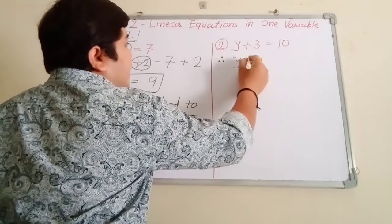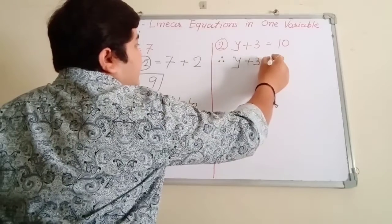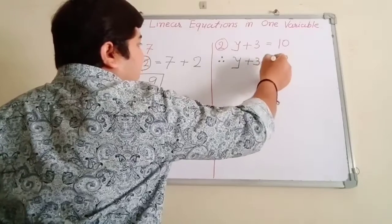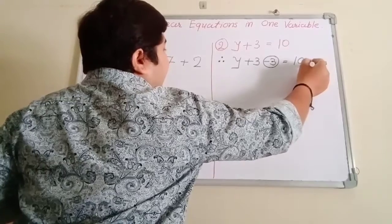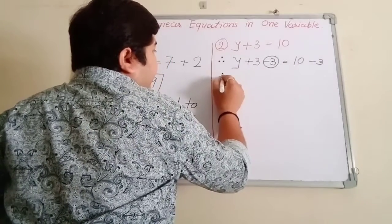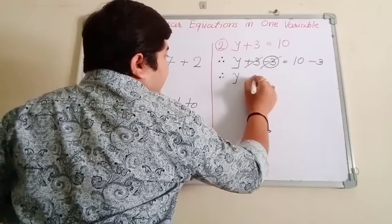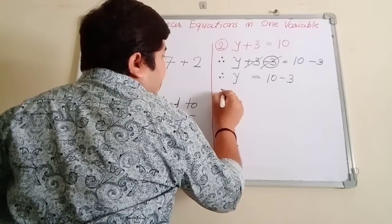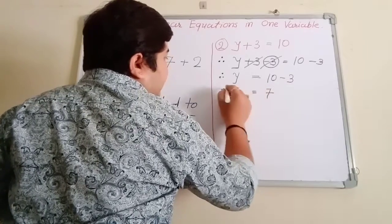Y plus 3 equals 10. Now the additive inverse is minus 3. Similarly, what we have written here, we will also write here. Here we have minus 3. Now y equals—these two numbers cancel—then we will write here 10 minus 3. Therefore, your answer is y equals 7. This is your answer.